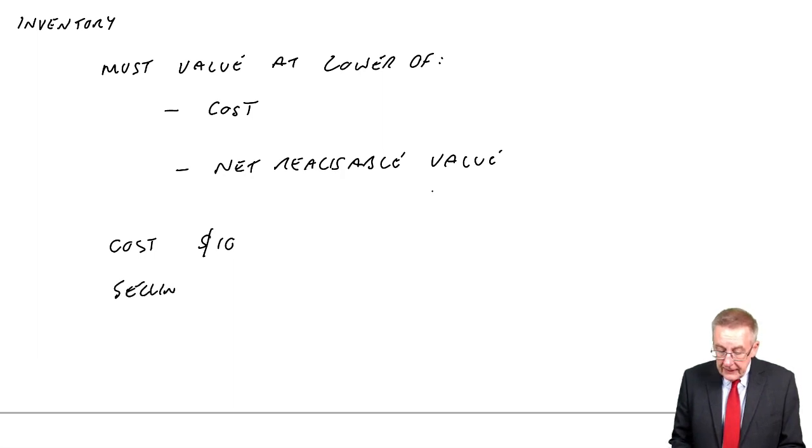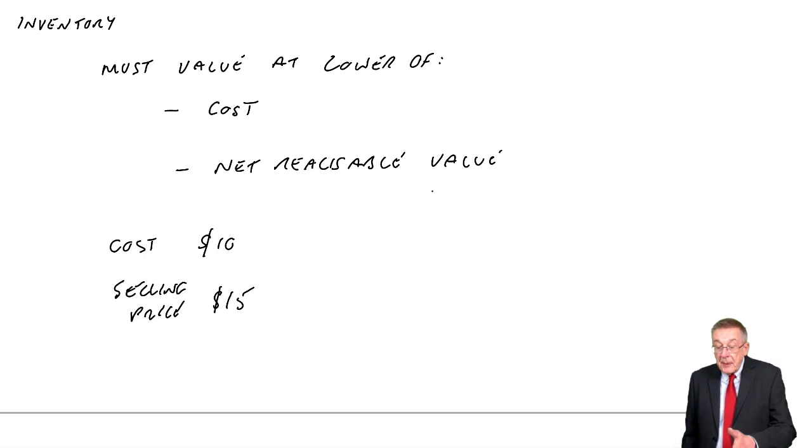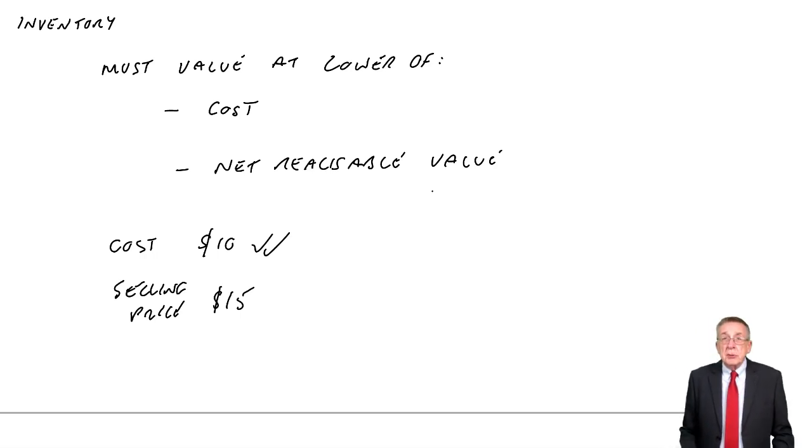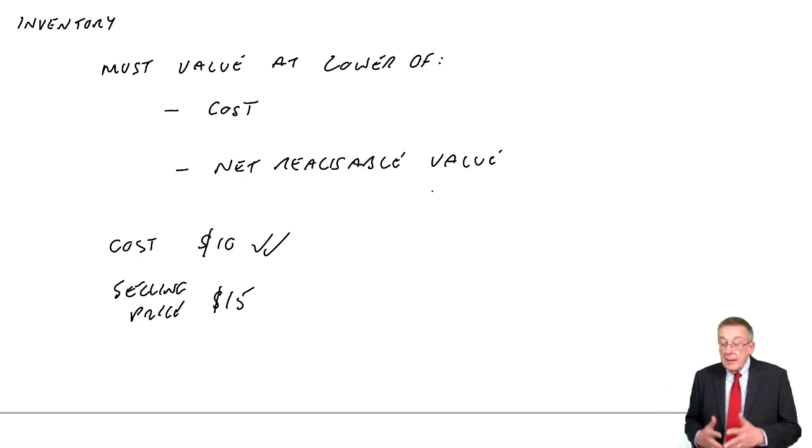If I buy and sell desks, if they cost me $10, and the selling price I intend to sell them at is $15, I appreciate I haven't sold them yet, they're in inventory, but I've paid $10, I'm going to sell them for $15. Well, you must value at the lower of the two, you must value them at $10. Because otherwise, you'd be taking profit when they haven't actually been sold. I only record the profit when they are actually sold. Anything in inventory must be valued at the lower, it must be valued at cost.